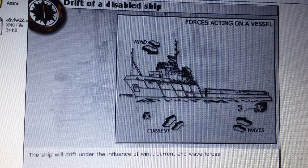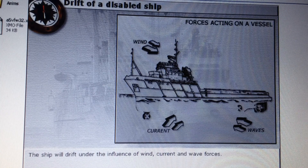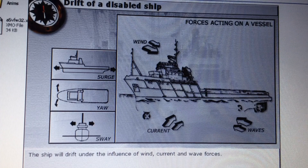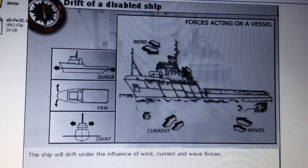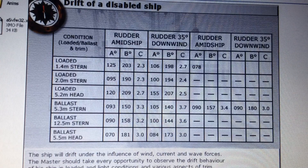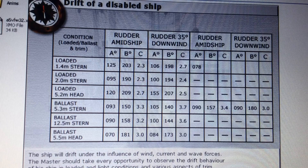The ship will drift under the influence of wind, current and wave forces. Direction and speed of drift cannot be predicted precisely, but results from tests should be consulted if available. The master should take every opportunity to observe the drift behaviour of his ship in loaded and light conditions and various aspects of trim. The drift pattern observed should be documented and retained on board for future reference.